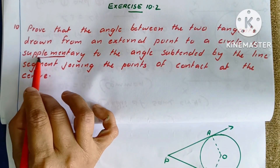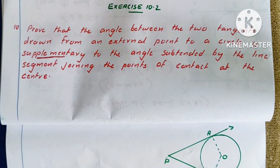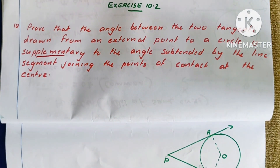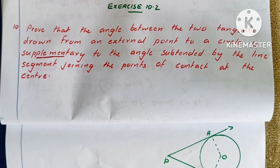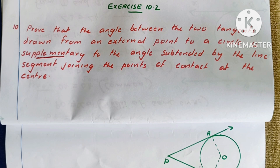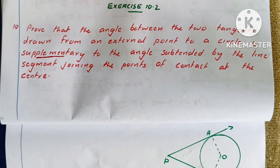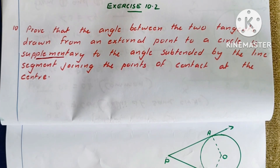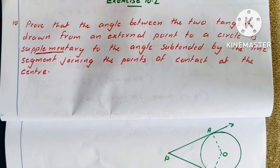Supplementary means the sum of the two angles is 180 degrees. That is, the two angles together make 180 degrees.